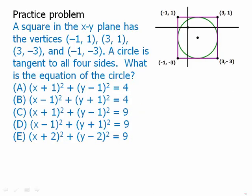Here's a practice problem — pause the video and then we'll talk about this. A square in the xy plane has vertices at (-1, 1), (3, 1), (3, -3), and (-1, -3). A circle is tangent to all four sides. What is the equation of the circle?